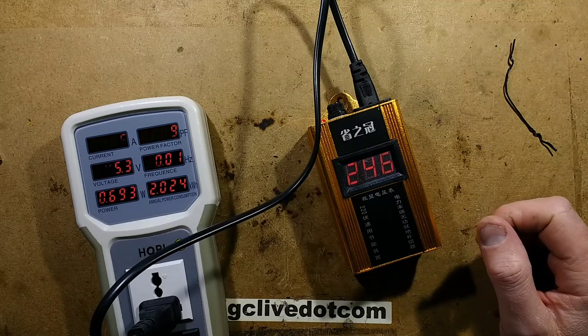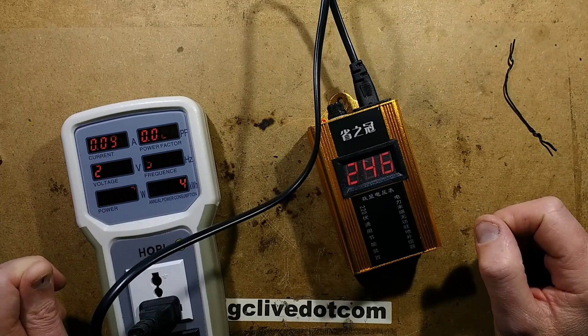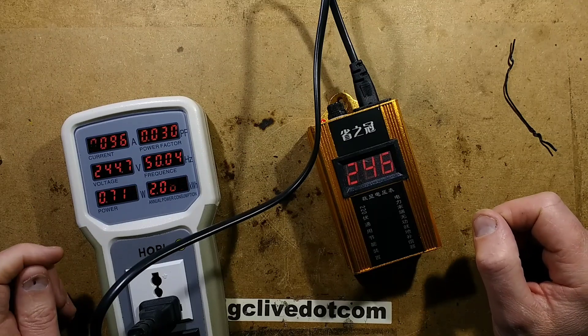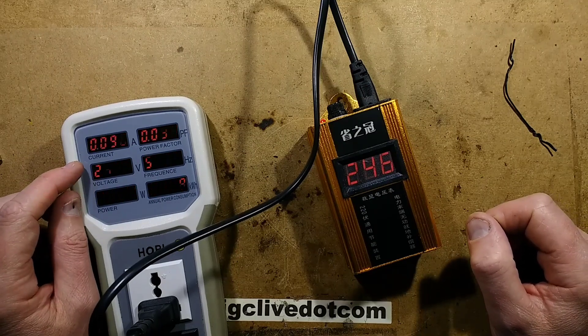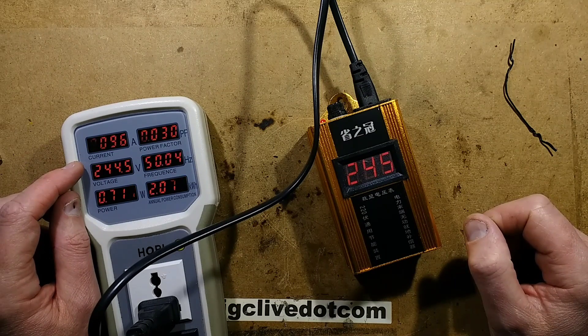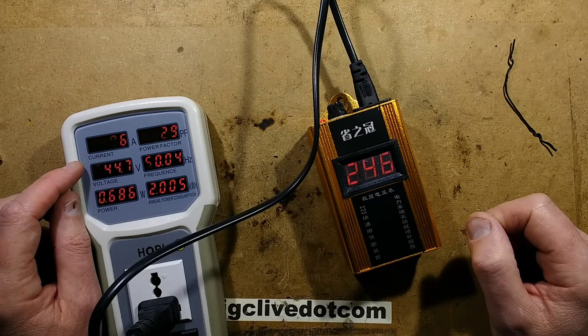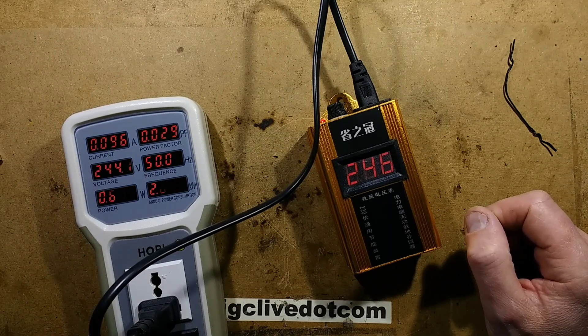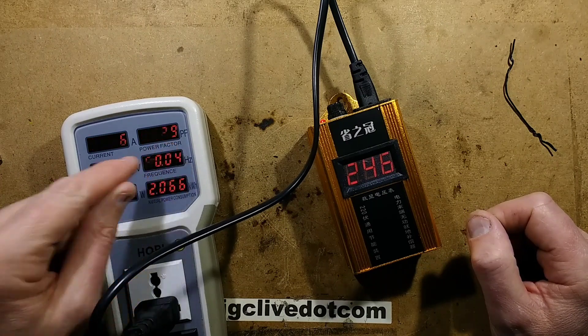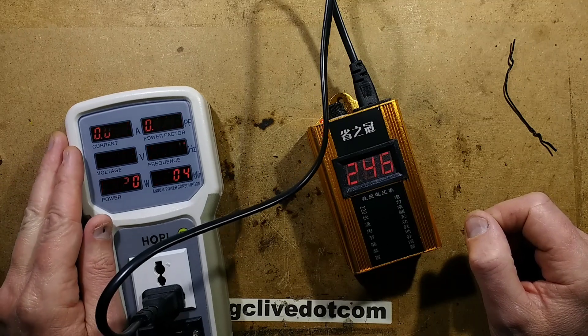So this is showing that the supply voltage is 246 volts. This says 245 volts, which is fine. That's good enough. I'm not going to quibble about a volt. The current, it's showing it as 96 milliamps. I was expecting higher than that. The power factor is terrible. It's like 0.03, which is what you'd expect if it is just a capacitor inside.